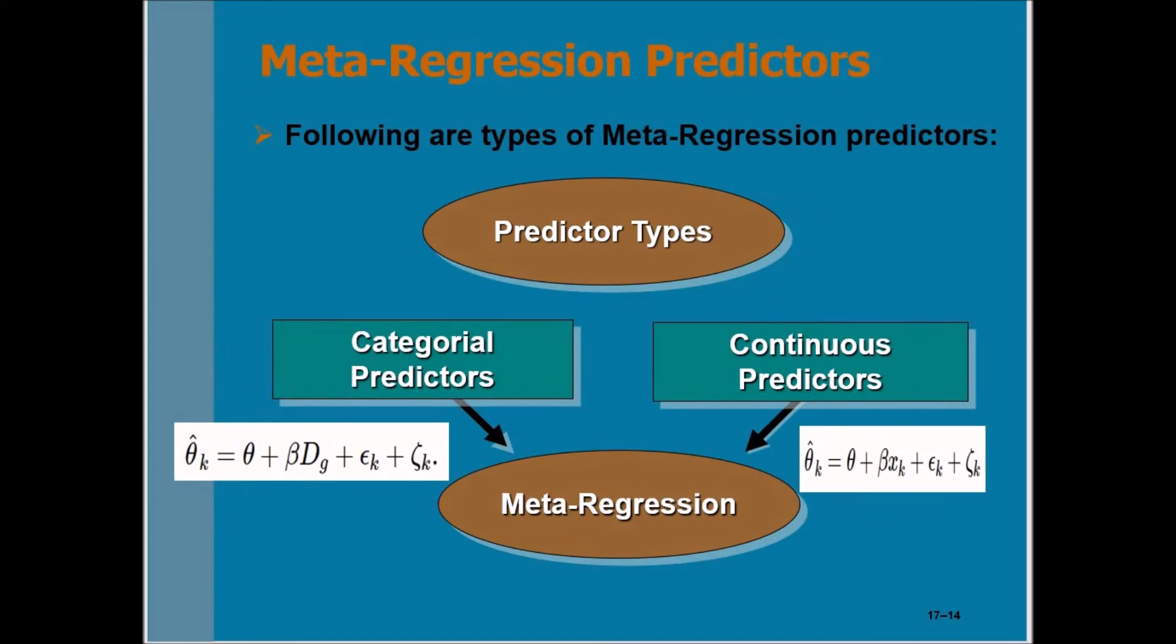In meta-regression analysis, you can use two types of predictors: categorical predictors and continuous predictors. In the equation for categorical predictors, theta plus beta d plus epsilon plus zeta, d reflects categorical predictors—meaning d is a variable having two, three, or more values. In the continuous predictor equation, theta plus beta x_1 plus epsilon plus zeta, x is the continuous variable. Keep in mind that in meta-regression analysis, you can use both categorical and continuous types of variables as your independent variables.